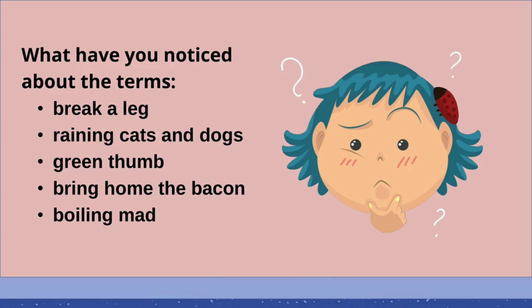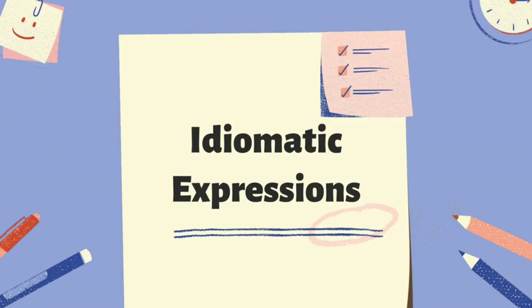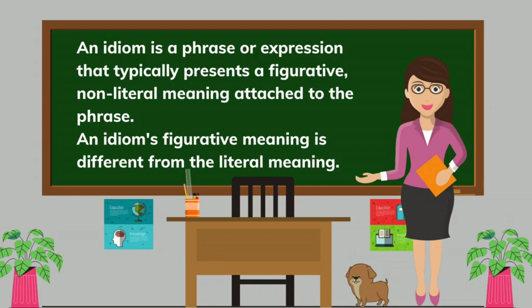What have you noticed about the terms? Break a leg, raining cats and dogs, green thumb, bring home the bacon, and boiling mad. An idiom is a phrase or expression that typically presents a figurative, non-literal meaning attached to the phrase. An idiom's figurative meaning is different from the literal meaning.